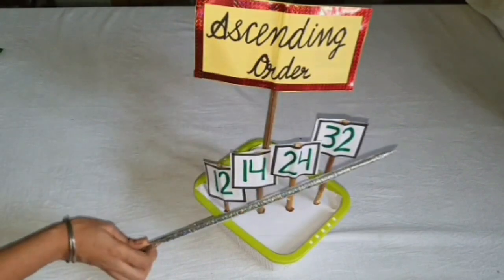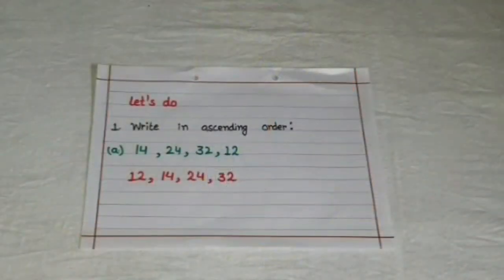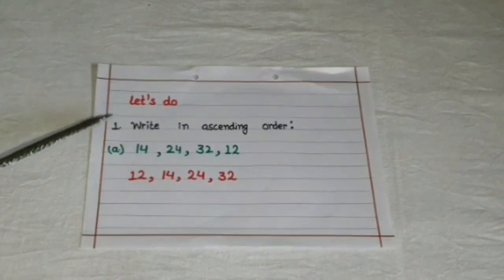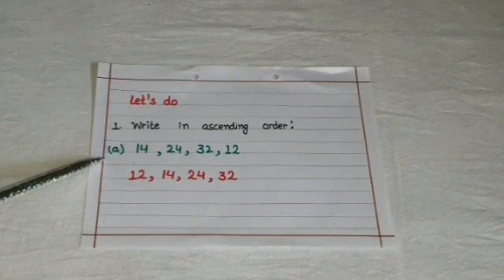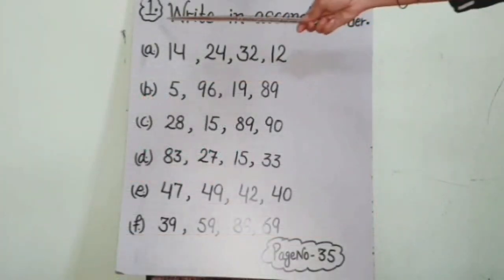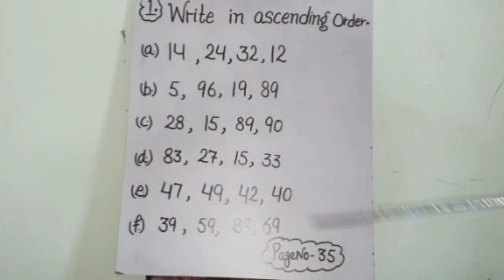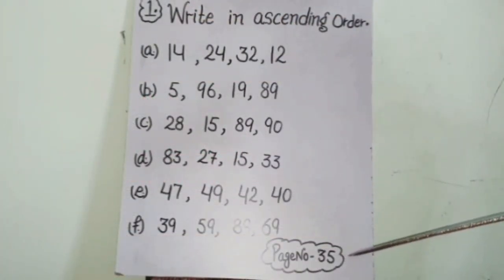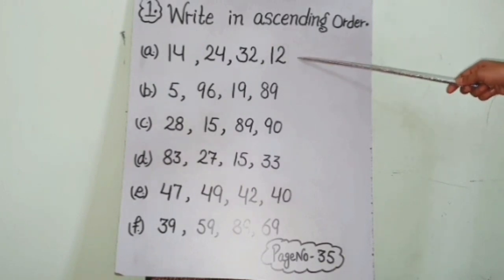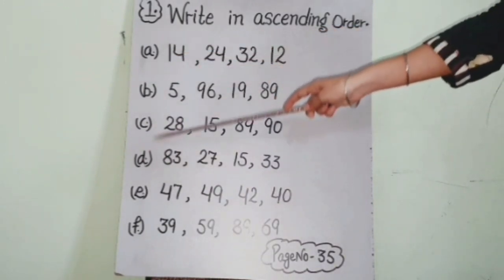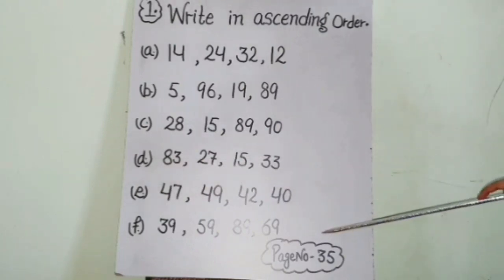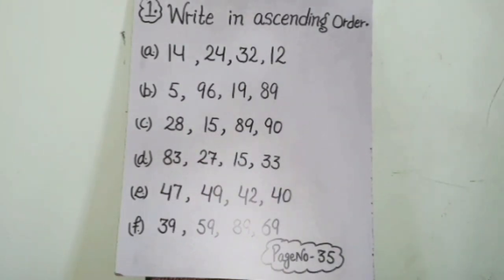Students, you have learnt to solve this type of statement. Now write down the sums in your notebook according to this pattern. Start from the first statement on page number 35 — this sum has been solved. You will solve the rest of the sums in the same way. Thank you.